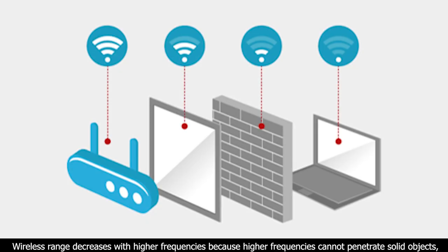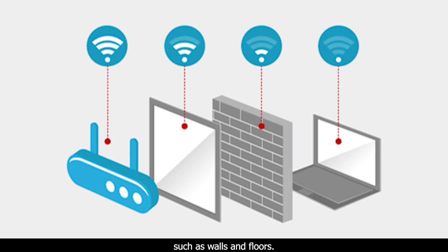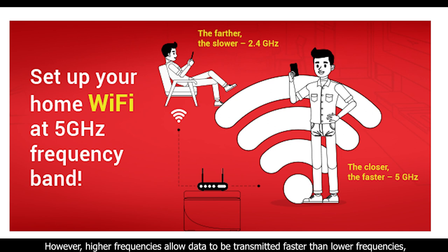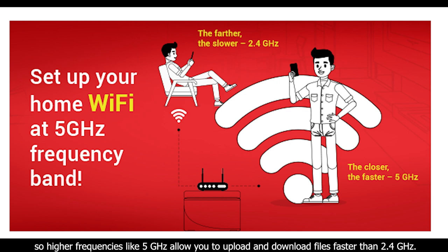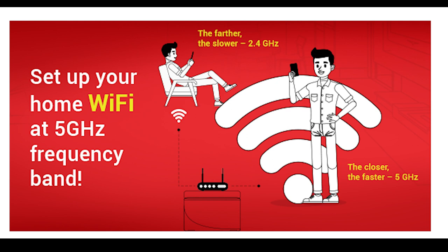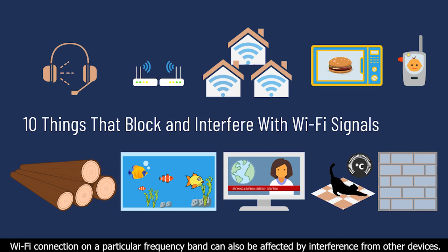Wireless range decreases with higher frequencies because higher frequencies cannot penetrate solid objects such as walls and floors. However, higher frequencies allow data to be transmitted faster than lower frequencies. So higher frequencies like 5 gigahertz allow you to upload and download files faster than a 2.4 gigahertz Wi-Fi connection.